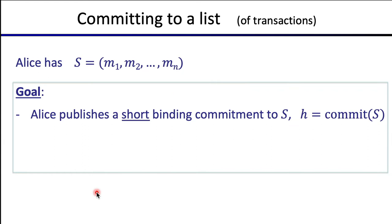Let's look at a more interesting application: committing not just to a single message but to a list of messages. The list we'll be interested in committing to is a list of transactions in a block. Suppose we have M1 to MN — N different messages forming a list S. Our goal is to build a commitment scheme where Alice publishes a short binding commitment to S, so once she publishes it, she can no longer change her mind. This commitment must again be just 32 bytes.